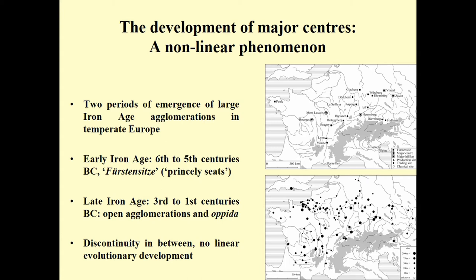Then there is a period of discontinuity in the fourth and part of the third centuries BC, where we see the disappearance or at least a marked decline of these centers. And it's important to emphasize that this is a non-linear development, in order to reject linear models of evolution, which do not work for the European Iron Age.